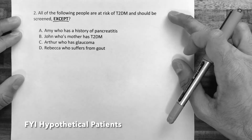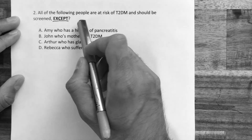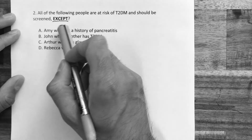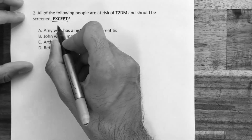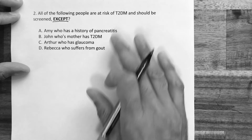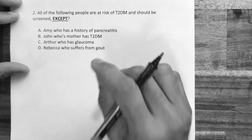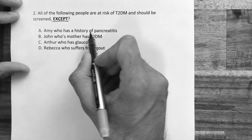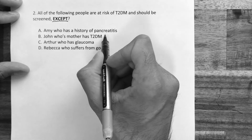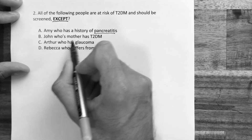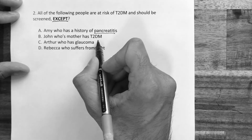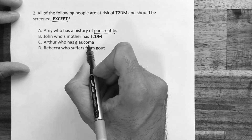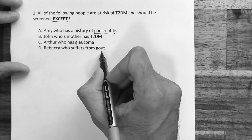Question number two: all of the following people are at risk of type 2 diabetes and should be screened, except. Again, the word 'except' — all of these are correct except one. The options are: Amy who has a history of pancreatitis; John whose mother has type 2 diabetes; Arthur who has glaucoma; and Rebecca who suffers from gout.